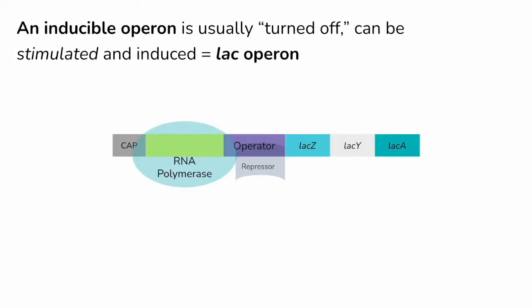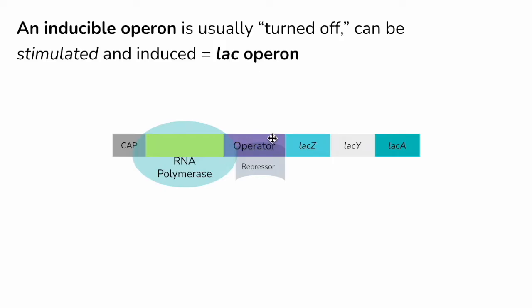Let's start with inducible operons, like the lac operon. In its usual state, we do not have transcription happening. That's mostly because we have a repressor bound to a section called the operator in this operon.